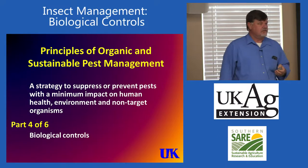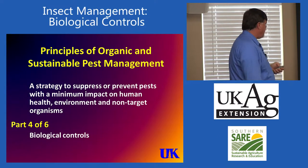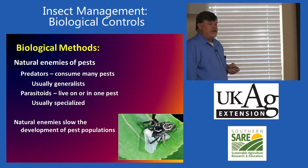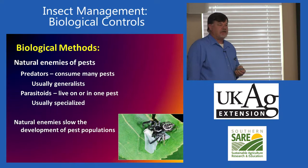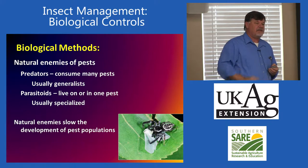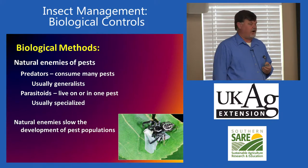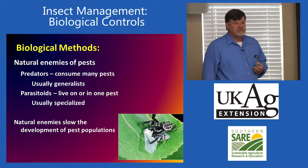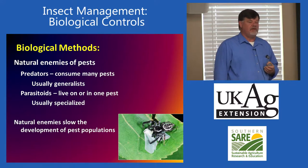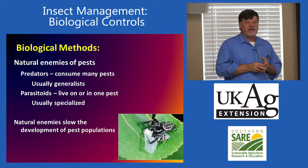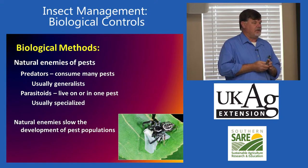Natural enemies are our first line of defense against many insect problems. Without natural enemies, pest problems are going to develop much faster. So natural enemies slow the rate of growth of pest populations.